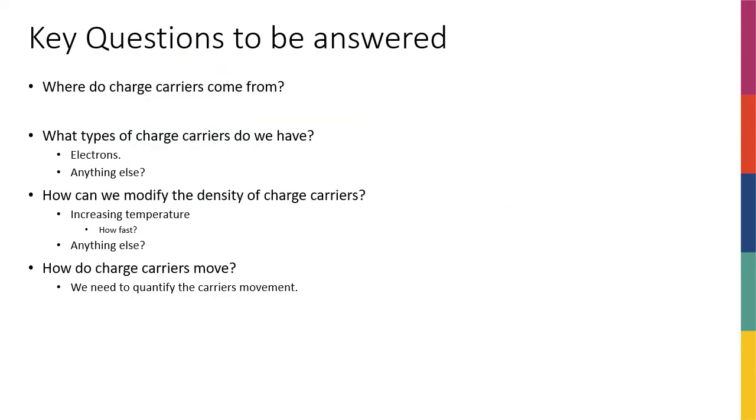So here I've listed all these questions, or all the important questions. The first one is, where do charge carriers come from? So we know that by increasing the temperature, we might have some charge carriers, and these charge carriers, these electrons are actually released from the covalent bonds. But are there other ways that we can have some more electrons or other types of charge carriers?